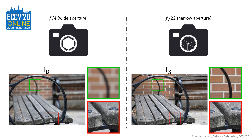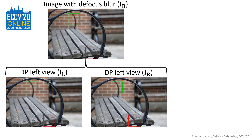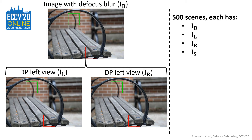More details about the capturing procedure can be found in the main paper. For the image with a spatially varying defocus blur IB, we provide the left and right dual pixel views. In total, we captured 500 scenes. Each has four images: IB, IL, IR, and the corresponding sharp image IS.